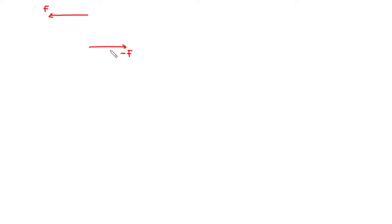We can describe a couple in this diagram. Let's assume that we have a force F acting this way, and then we also have another force, negative F, also acting that way. And then we have a perpendicular distance D which separates the two forces. The magnitude of both forces are the same and they are parallel to each other, except that they act opposite to each other. That is why we have one to be a positive value and the other to be a negative value.